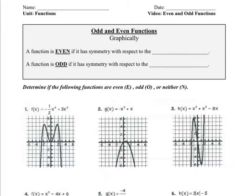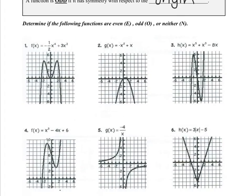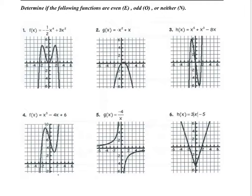Hi everyone. In today's lesson we're going to talk about odd and even functions and how to find them graphically. A function is said to be even if it has symmetry with respect to the y-axis. A function is said to be odd if it has symmetry with respect to the origin. The y-axis symmetry should be very easy to find, so let's look at these six examples and see if we can find symmetry with respect to the y-axis.